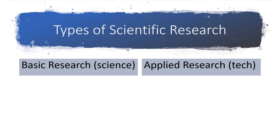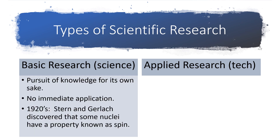To give you an example where science came before technology, I want to introduce a couple of vocabulary words: basic research versus applied research. Basic research is the pursuit of knowledge for its own sake — you don't have an immediate application or product, but it seems exciting and you want to find out all about it. An example came in the 1920s where two scientists, Stern and Gerlach, discovered that the nuclei of some atoms have a property known as spin. They sent a beam of atoms through a magnetic field and discovered that some atoms veered off in one direction and others in the opposite direction, which they explained by proposing this property known as spin.